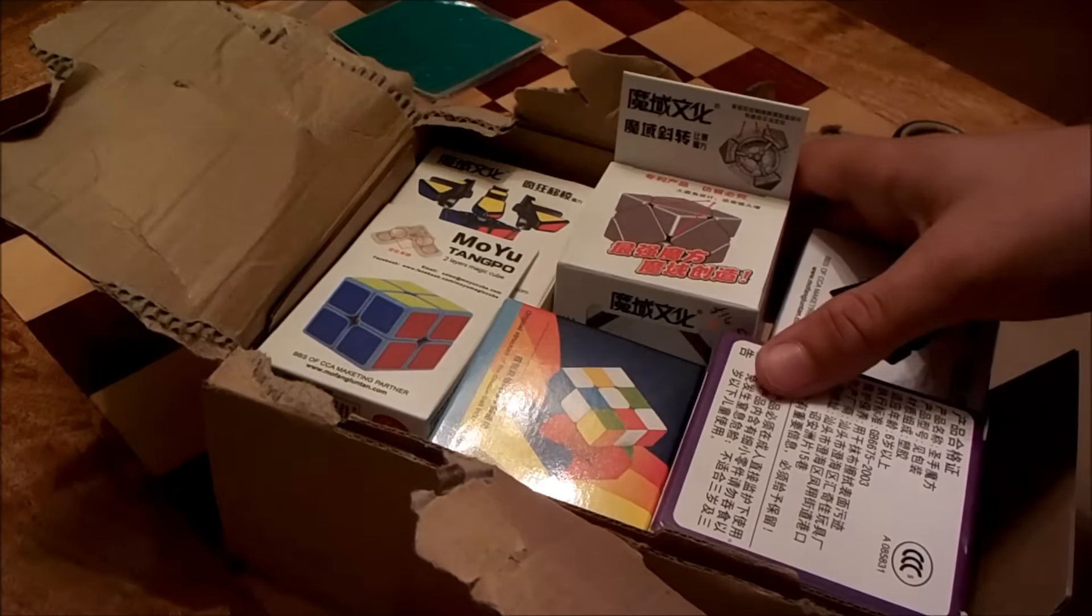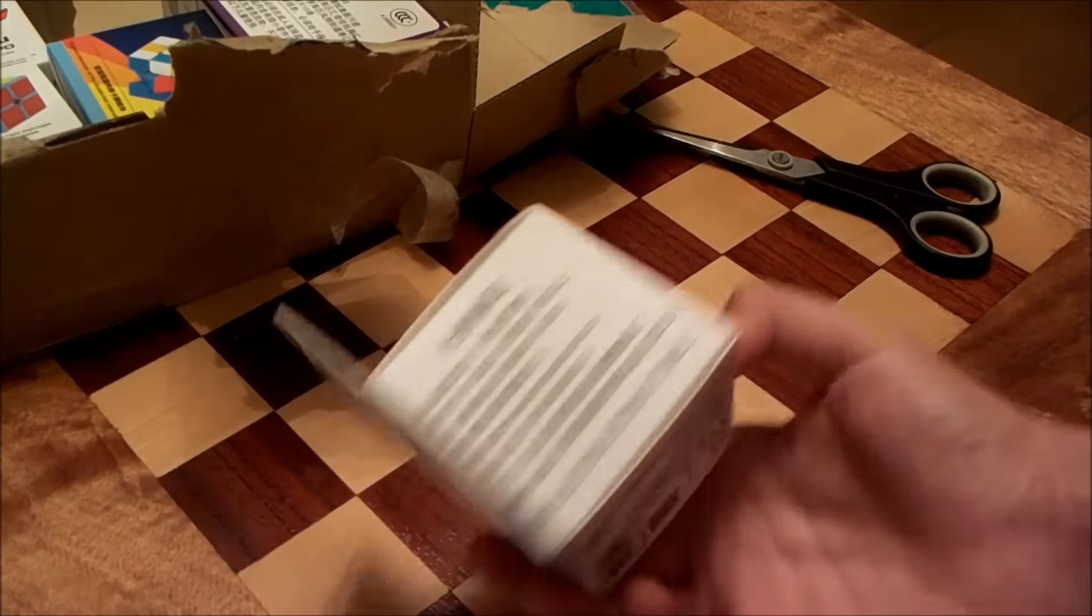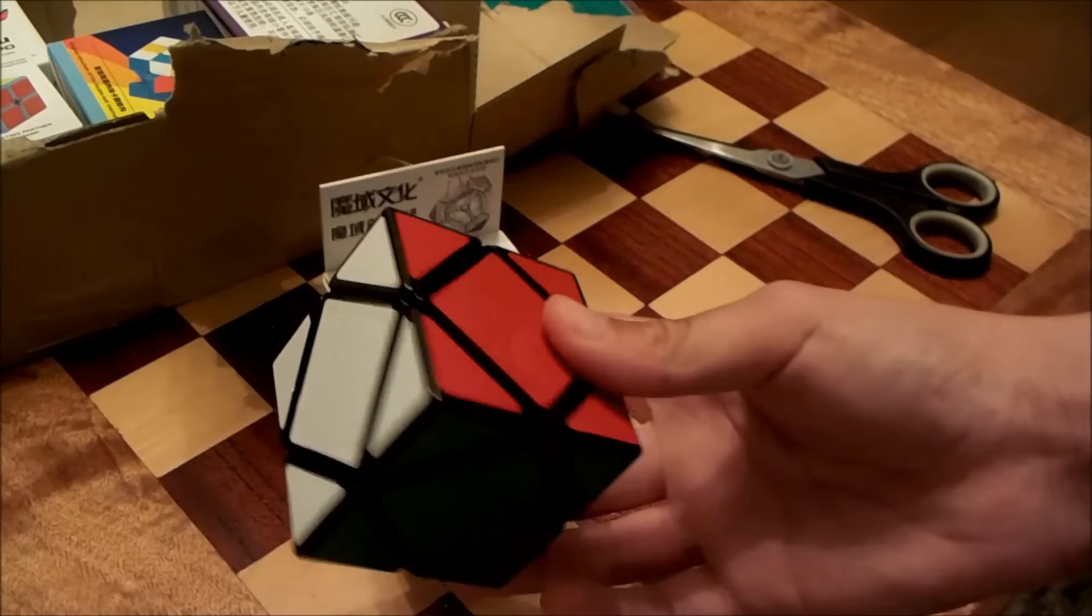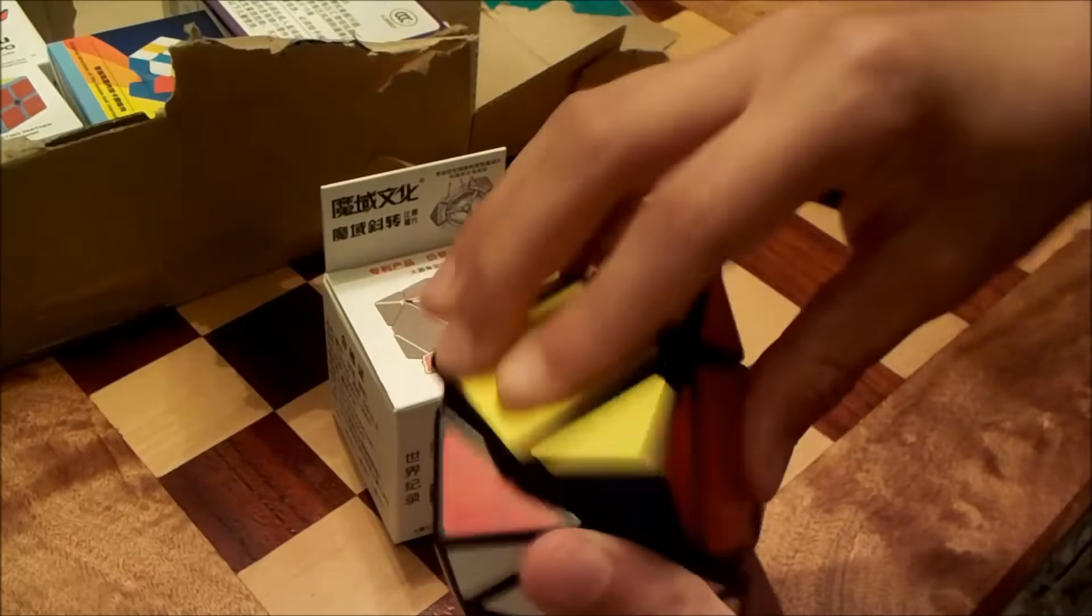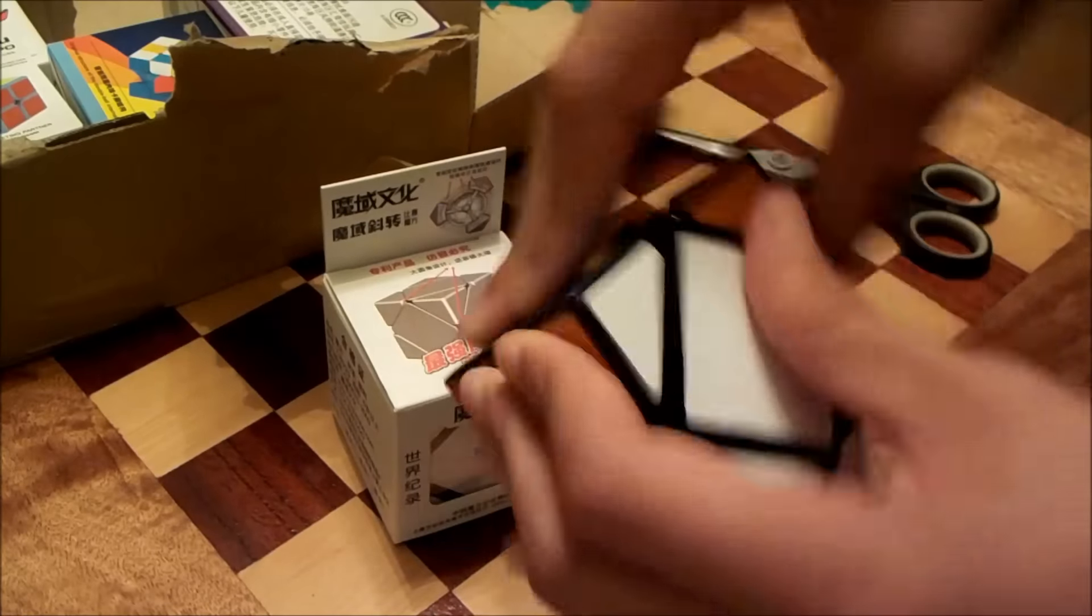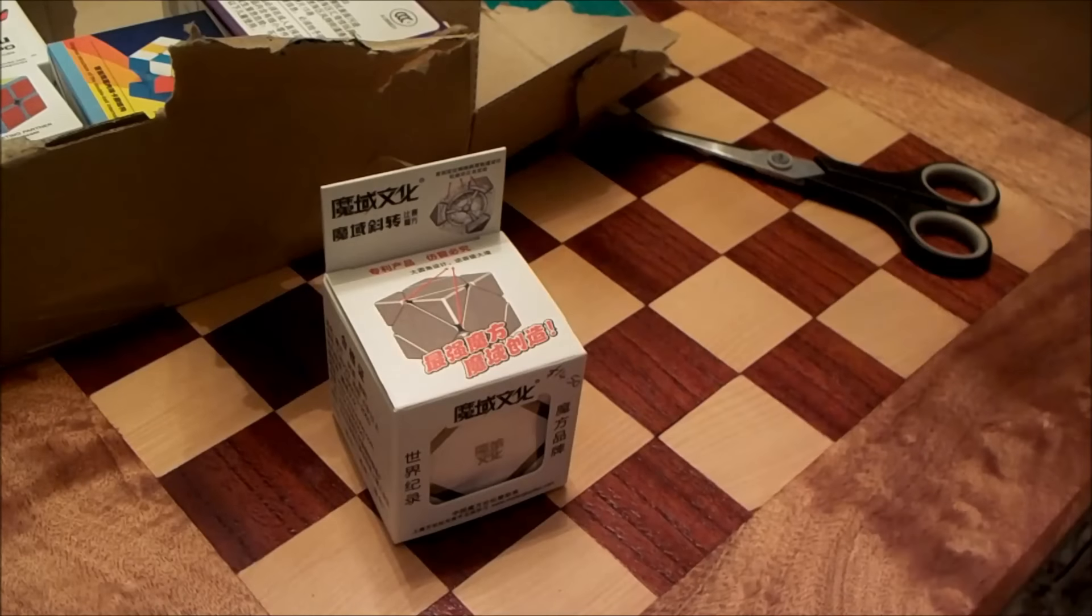Now let's get on with the first cube. First cube here, we have the Moyu Skewb. Now, if I didn't get this, then I would be stuck with the Lanlan, which I got a long time ago. And if you know what a Lanlan cube is like, you would know it's pretty rubbish. So yeah, let's unbox the Moyu Skewb.